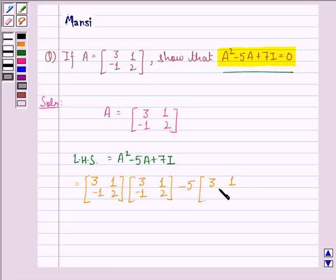that is [3, 1; -1, 2] plus 7 into identity matrix, that is [1, 0; 0, 1].